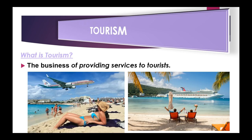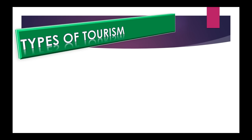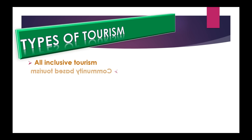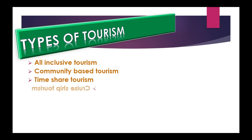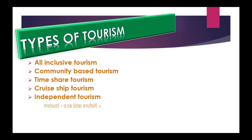Next, we'll be looking at types of tourism so you can get a better understanding. We're going to list them out and then get into detail with each one. First, we have all-inclusive tourism. Second, community-based tourism. Third, timeshare tourism. Fourth, cruise ship tourism. Fifth, independent tourism. And sixth, nature and ecotourism.